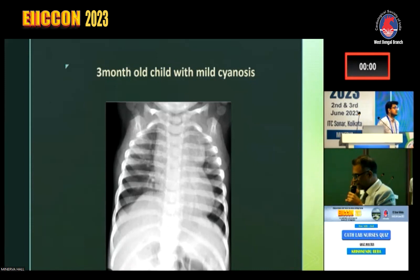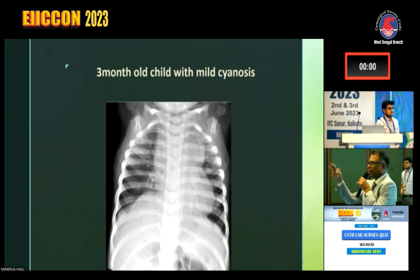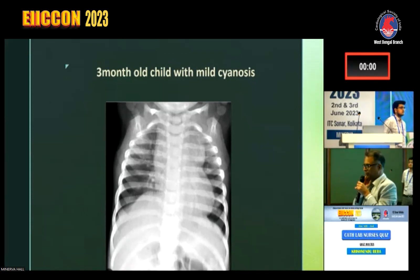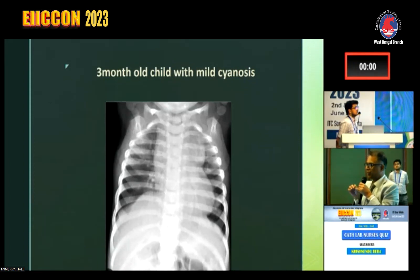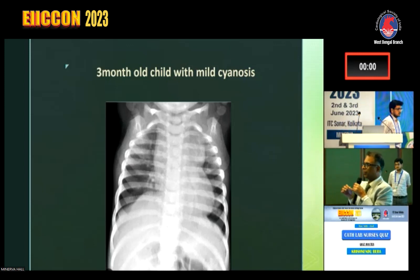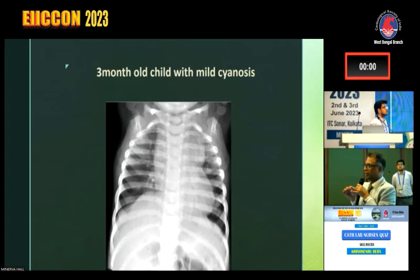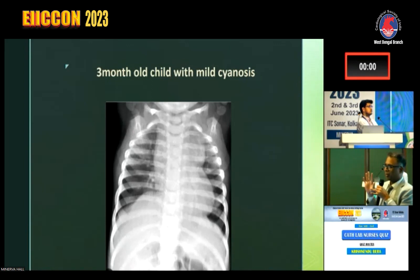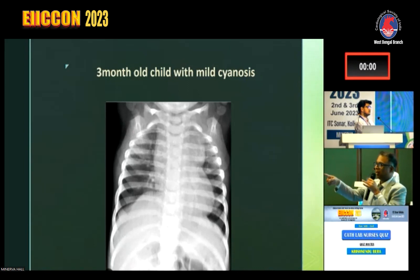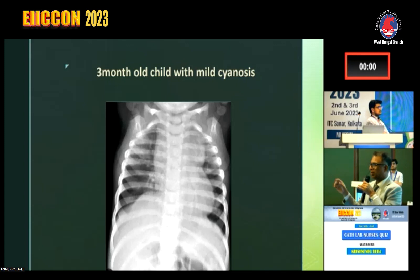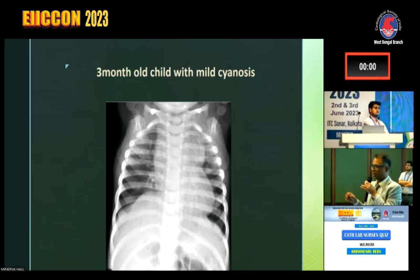Suddenly during a cath lab procedure there is a straight line on the monitor. What could be the possibility? One: the person is dead. Two: the patient has gone into VF. Three: the patient leads got disconnected. Four: the ECG machine is at fault. Out of these four, raise your hand. We can see the patient's condition, right? So first, when the patient is doing well and you don't see any QRS, look at the ECG basic connections rather than just panicking. If the patient loses consciousness and goes into seizures or jumps from the bed, then definitely start CPR.